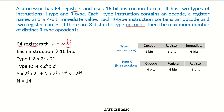This processor uses a 16-bit instruction format, meaning each instruction is 16 bits. It has two types of instructions: I-type and R-type. Each I-type instruction contains an opcode, a register name, and a 4-bit immediate value. The register requires 6 bits, and the immediate requires 4 bits, so 6 plus 4 equals 10, leaving 6 bits for the opcode.